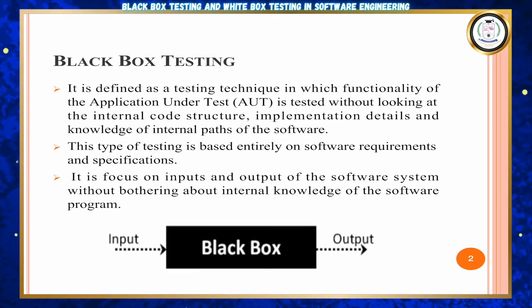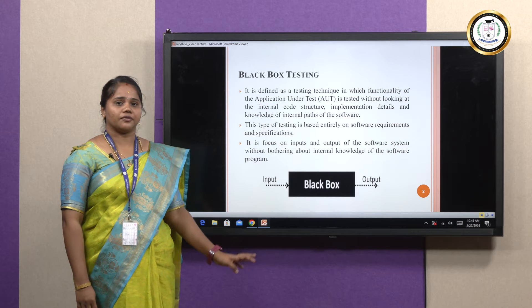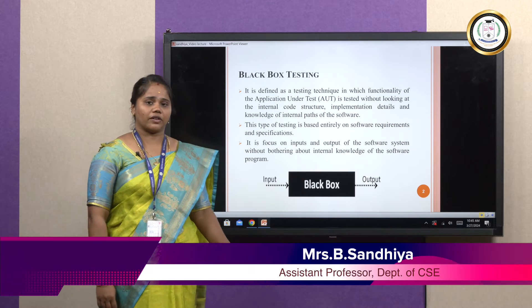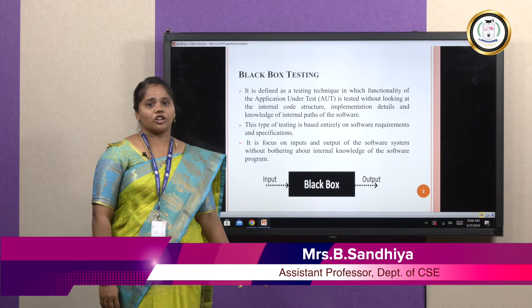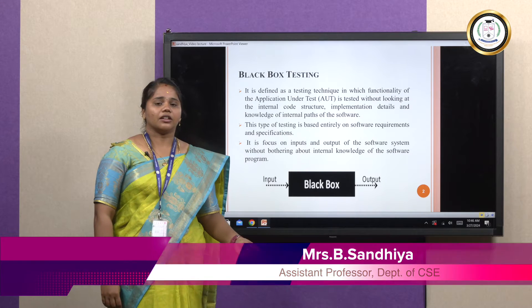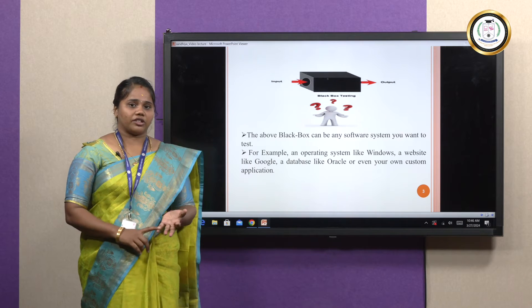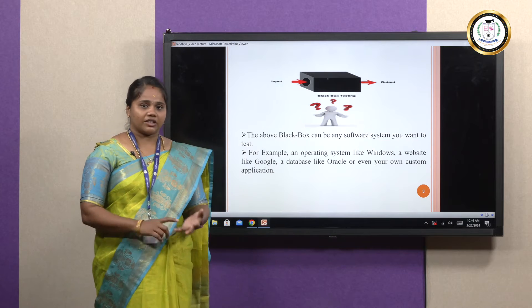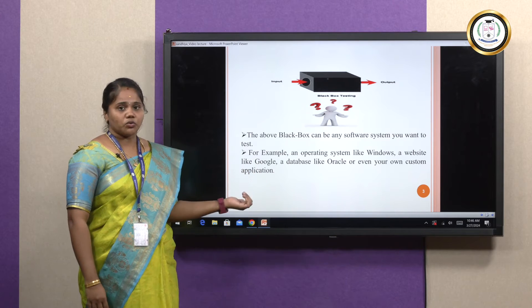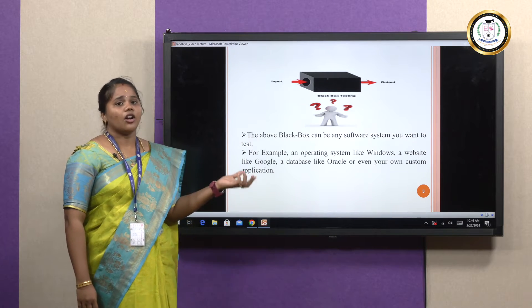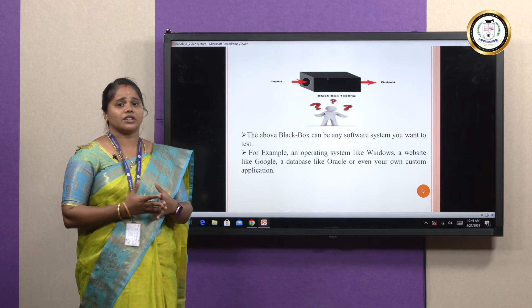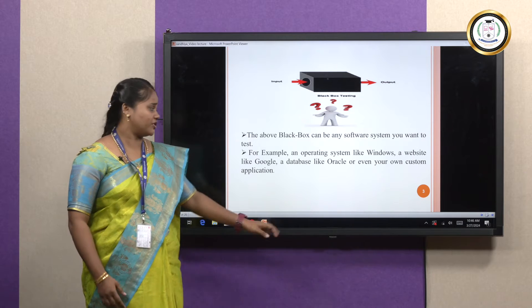First, we will discuss about black box testing. Black box testing is based on the system requirements and functionality. It is focused on the input and output of the software process and is not concerned about the internal structure or internal specification. Any type of system can be tested using black box testing, such as Windows operating system, websites like Google, and databases like Oracle, or any user-specified application.